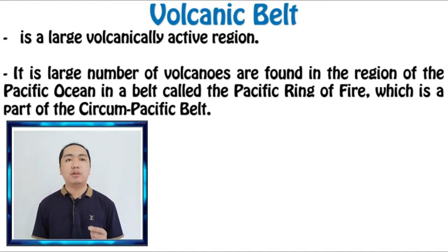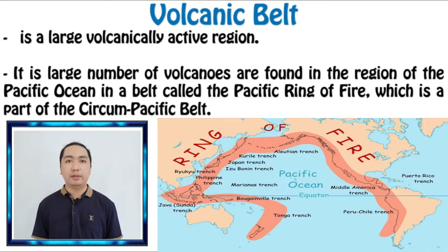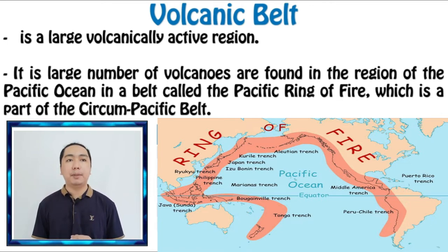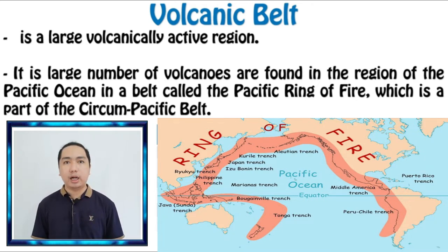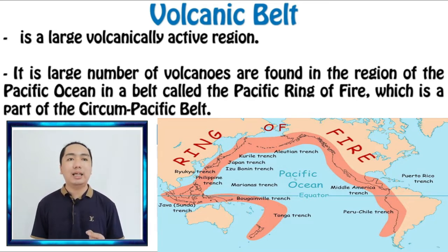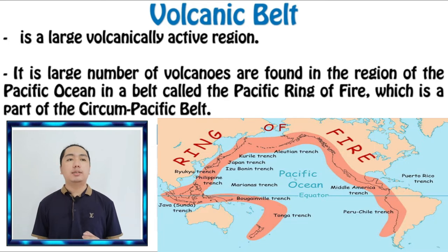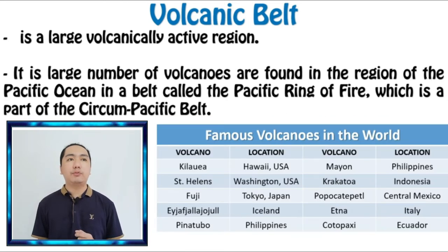A large number of volcanoes are found in the region of the Pacific Ocean, in a belt called the Pacific Ring of Fire, which is a part of the Circumpacific Belt. This ring extends to the Andes of South America, Central America, Mexico, the Cascade Mountains of Western United States, the Aleutian Islands, Kamchatka, the Kuril Islands, Japan, the Philippines, Indonesia, Celebes, Papua New Guinea, the Solomon Islands, New Caledonia, and New Zealand.